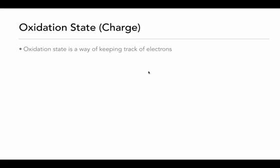The first reaction type we're going to look at is redox reactions. Before we do that, let's define what an oxidation state is. An oxidation state is a way of keeping track of the electrons in a chemical reaction. In many chemical reactions, electrons are going to move around from one atom to another, causing what we call a change in the oxidation state.